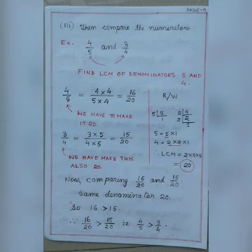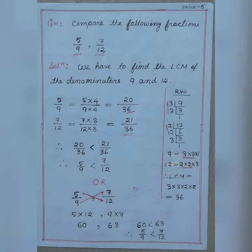Question: compare the fractions 5 by 9 and 7 by 12. Step 1: find the LCM of the denominators 9 and 12. For 9: 9 equals 3 into 3. For 12: dividing by 2 gives 6, dividing by 2 gives 3, dividing by 3 gives 1, so 12 equals 2 into 2 into 3. Therefore the LCM is 3 into 3 into 2 into 2, which equals 36.